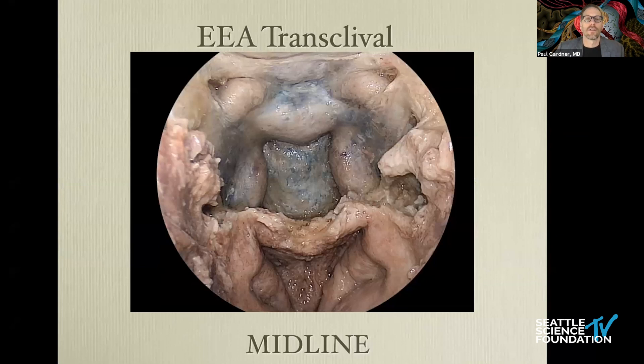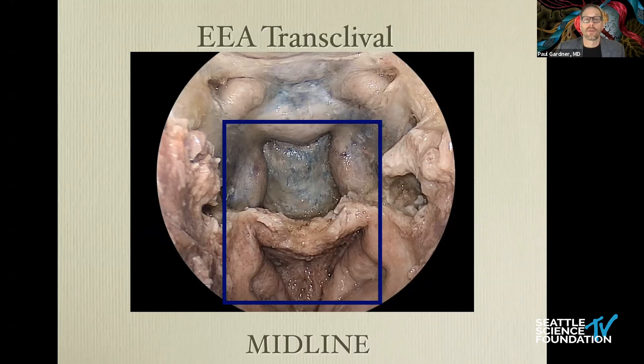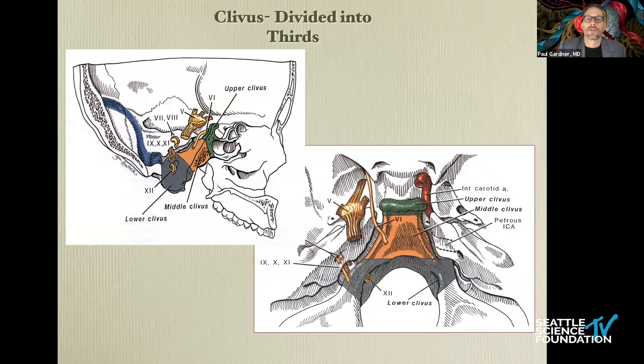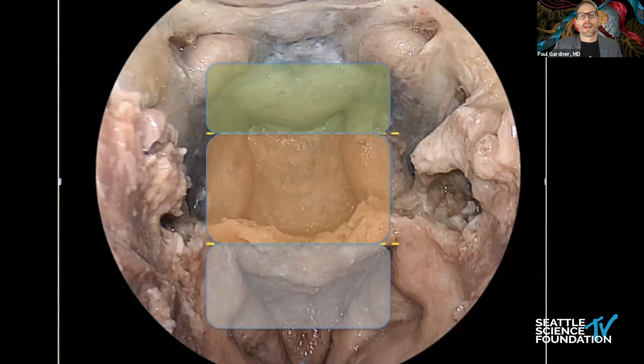The endoscopic endonasal transclival approach is a midline structure, and this is a midline approach that ends up being extremely direct. The clivus traditionally was divided into thirds — from Shaker's book — essentially based on which approaches are needed to access different areas: the upper third requiring an orbitozygomatic, the middle third a transpetrosal approach, and the lower third below the jugular foramen through a far lateral. From an endonasal approach, these are really just extensions of each other.